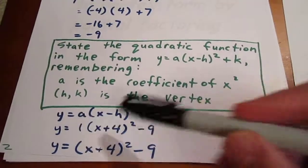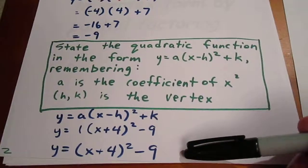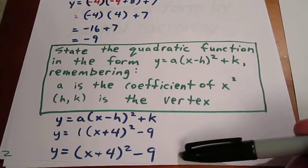And since we usually wouldn't write that 1, we don't in this case either. And we have our final expression y equals x plus 4 quantity squared minus 9.